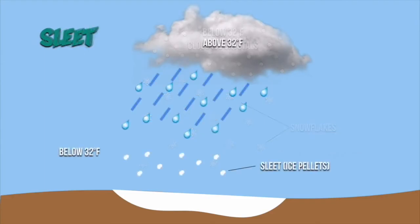Conditions that produce similar effects to snow would be sleet. Sleet is where up in the clouds we have water droplets coming down as rain, but as they get closer to the surface — which is colder than 32 degrees Fahrenheit — those rain droplets freeze into ice pellets. These ice pellets accumulate on the Earth's surface, mostly creating conditions that are hazardous to drivers and a really slushy mix.